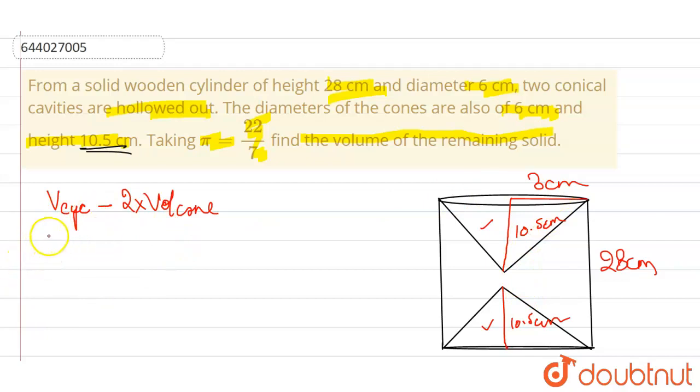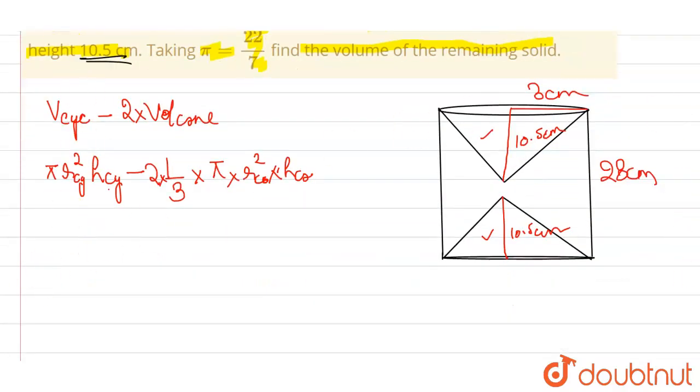Volume of cylinder can be represented by π r² h minus twice, since two cones are there, 1/3 π r² h of cone. Now on substituting the values...